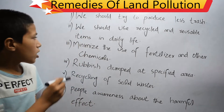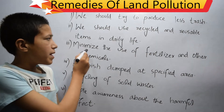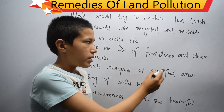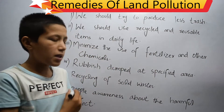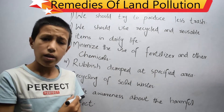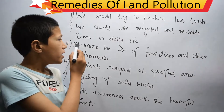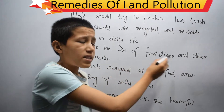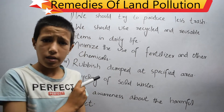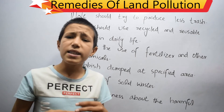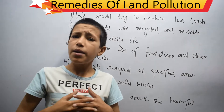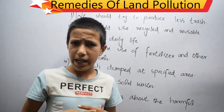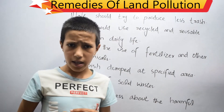The third one is minimize the use of fertilizer and other chemicals. Fertilizer contains chemicals which damage the fertility of soil.